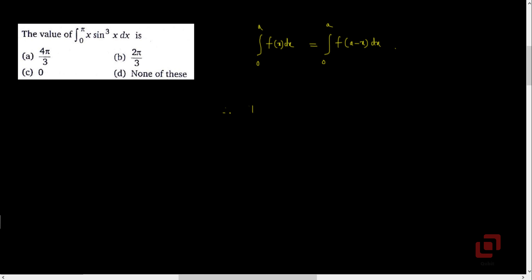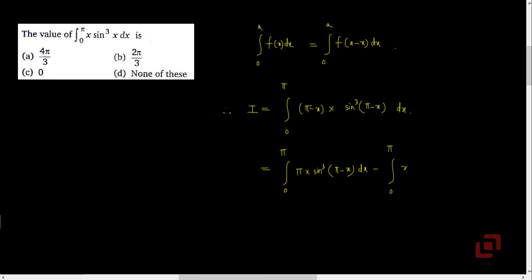Therefore, the given integral, let's call it I, will be equal to integral from 0 to pi of (pi minus x) into sin cube of (pi minus x) dx, which expands to integral from 0 to pi of pi into sin cube of (pi minus x) dx minus integral from 0 to pi of x into sin cube of (pi minus x) dx.